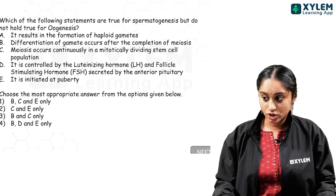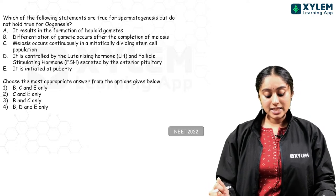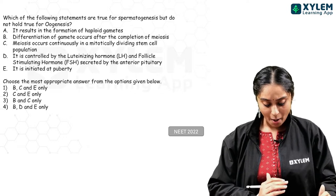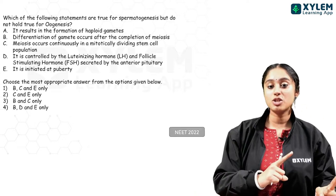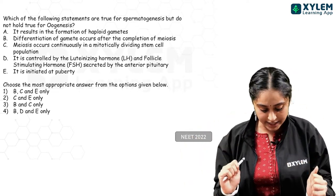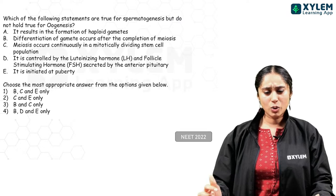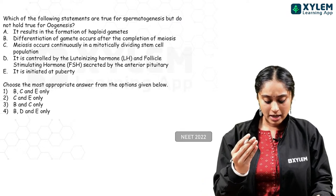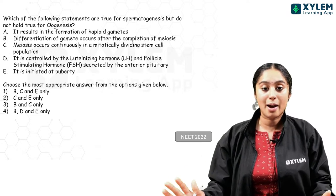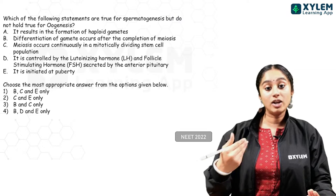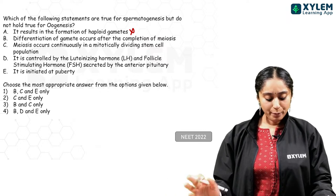NEET 2022: which of the following statements are true for spermatogenesis but do not hold true for oogenesis? Statement A: it results in the formation of haploid gametes — irrespective of spermatogenesis or oogenesis, gametes have to be haploid so the zygote's diploid condition can be restored. This statement applies to both.